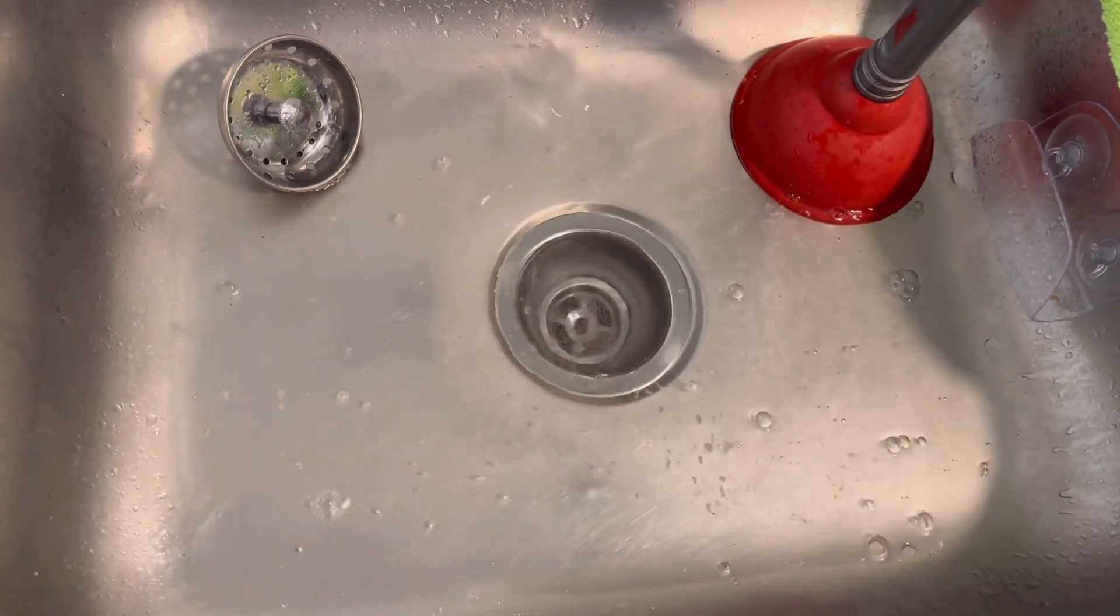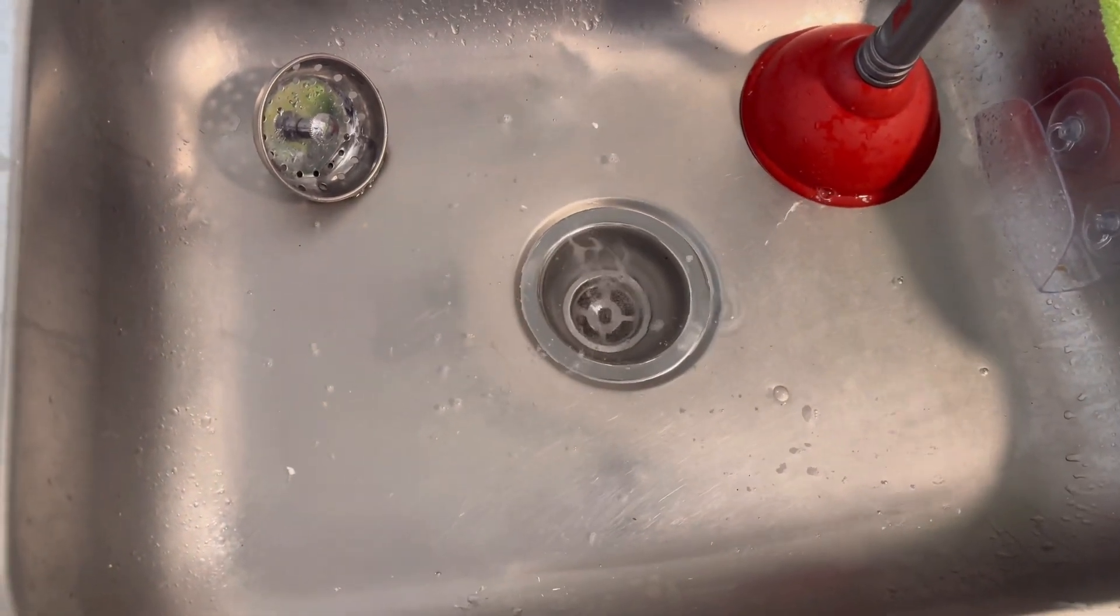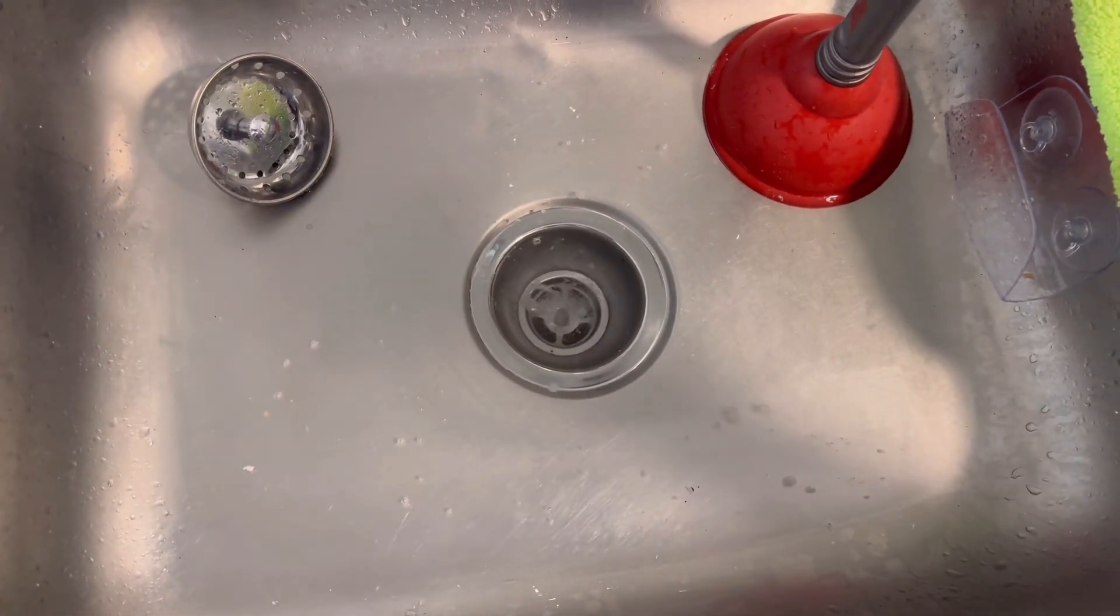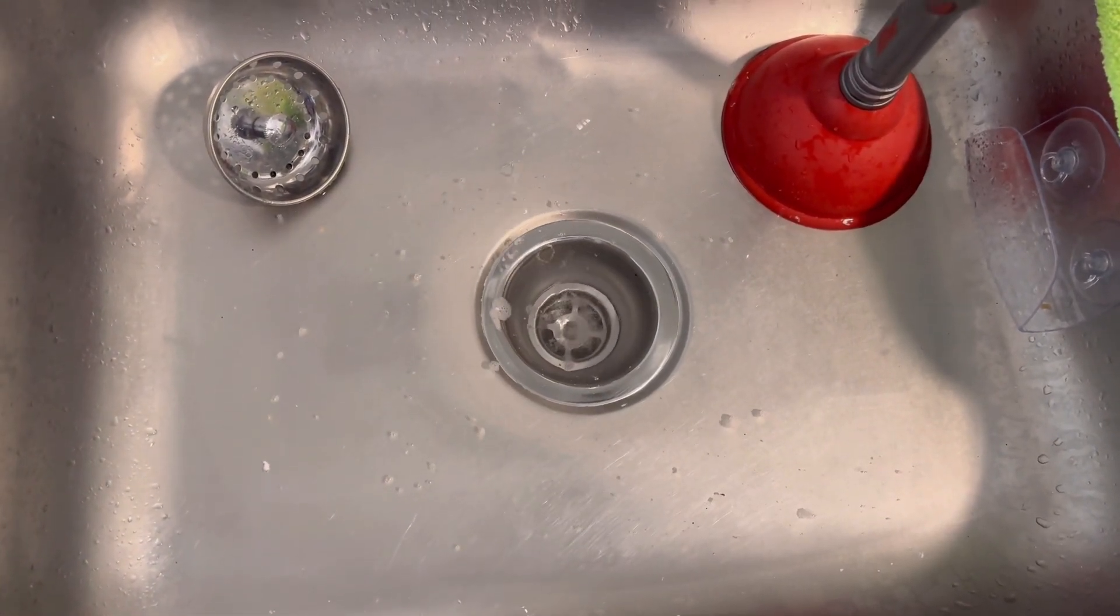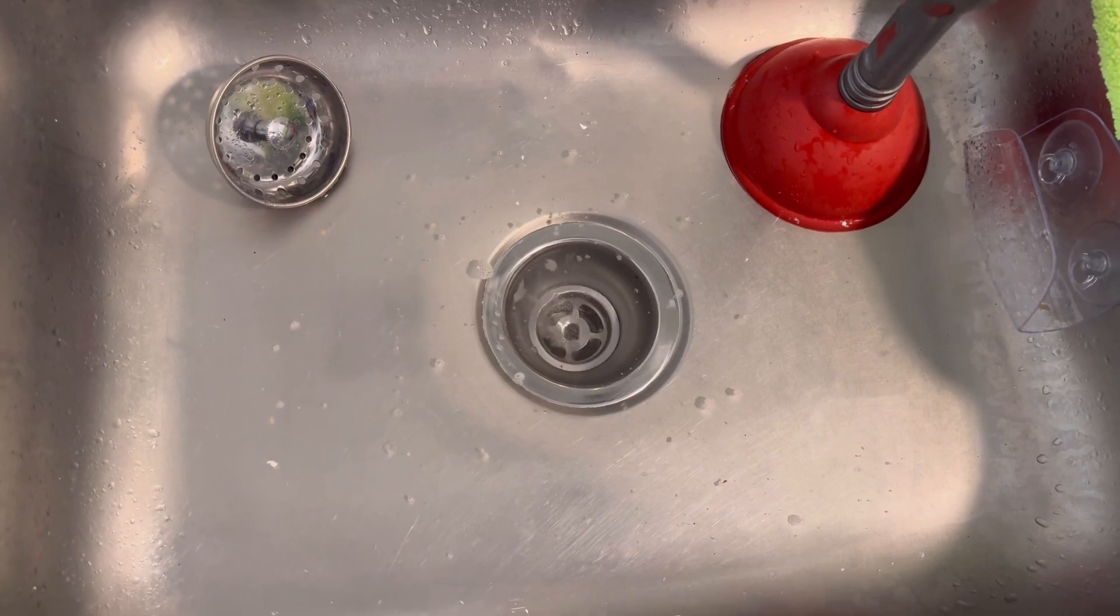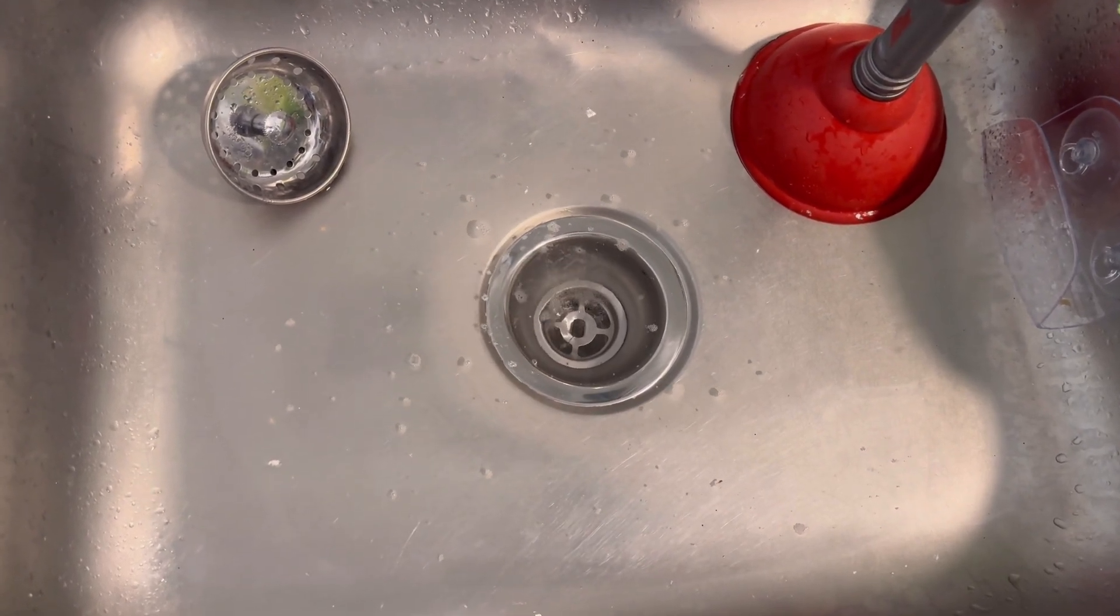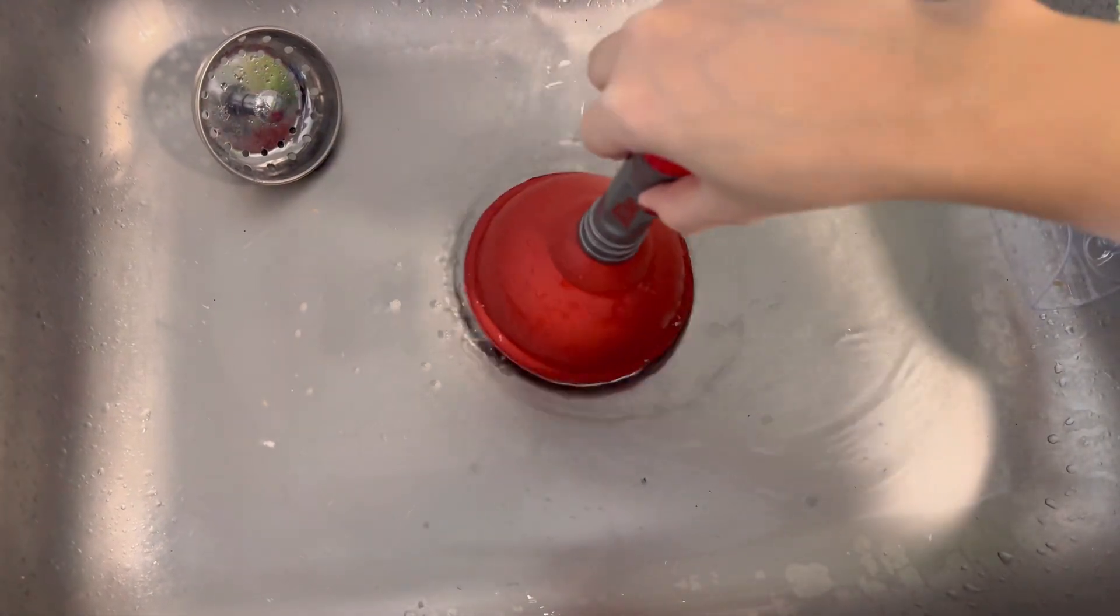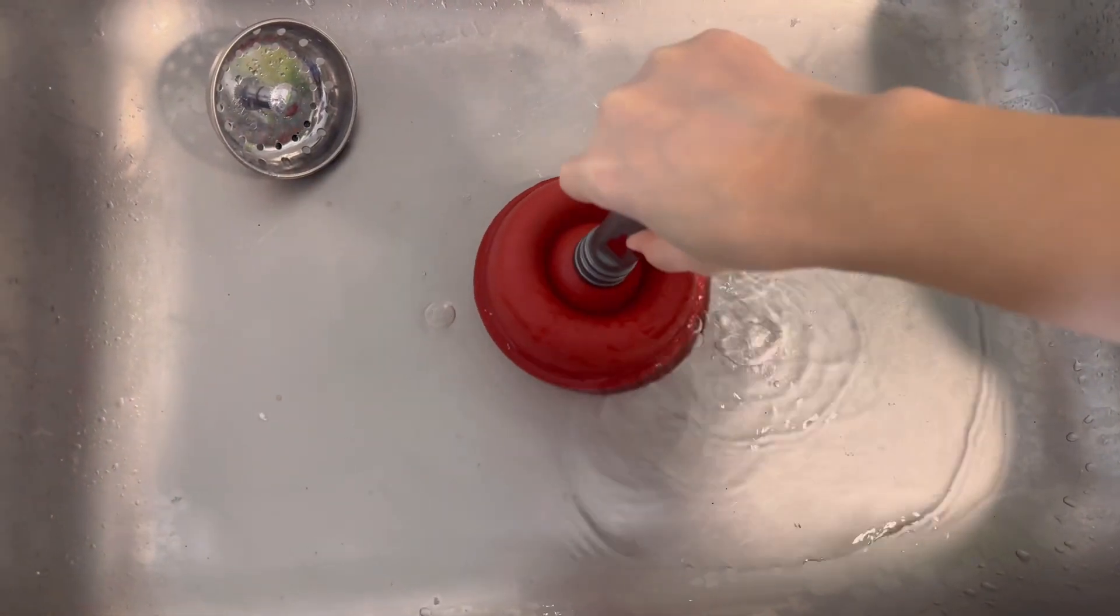I already had a plumber come in and he replaced my pipes and the basic lines of the sink. I did try drain remover and I've tried all these different things, so I'm just trying to source my best solution for this.